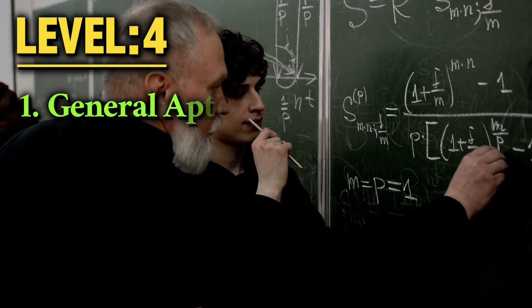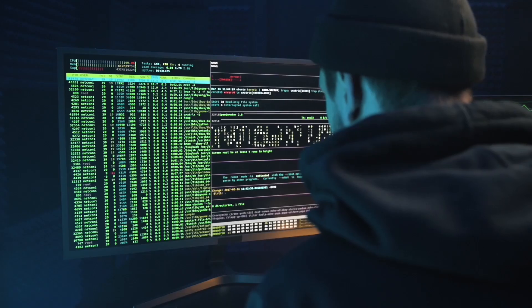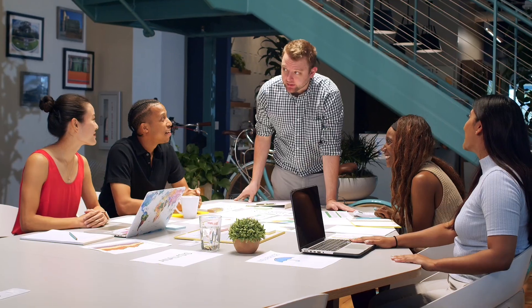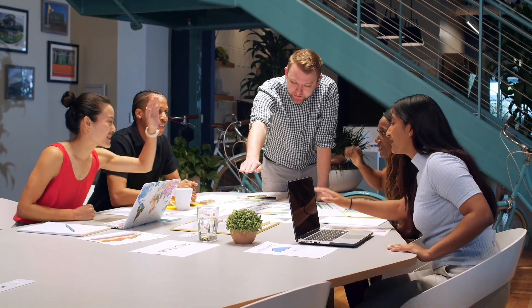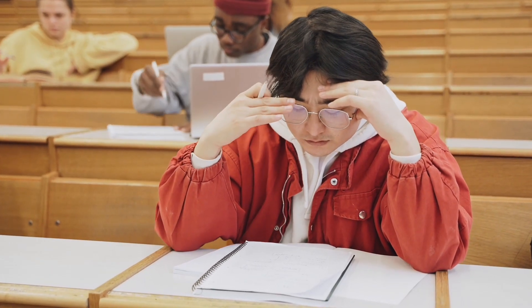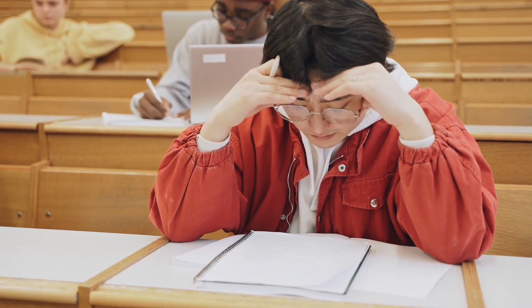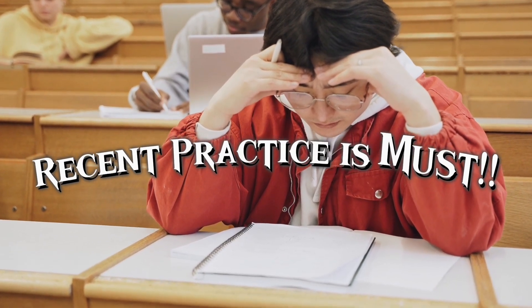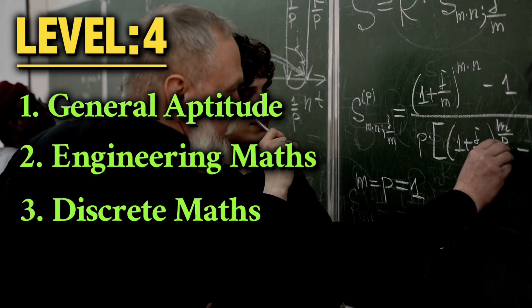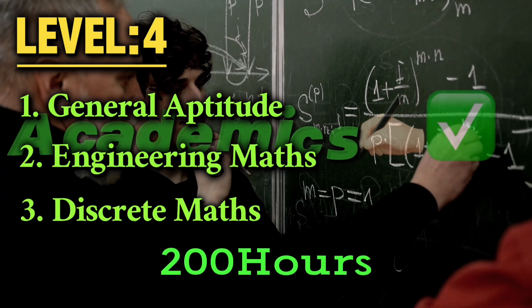Now you can do maths and discrete maths alongside Levels 1, 2, and 3. Aptitude is used in programming and in fact in daily life, so it is somewhat automatically prepared for engineers. Still, at the end you have to give attention to specific types of questions, because it would be difficult to solve those in one shot during the exam if not practiced well. Level 4 can be done in great detail within 200 hours, and academics are completed with Level 4.